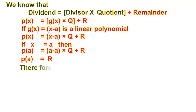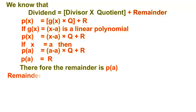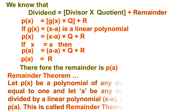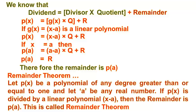Hence, P of A is equal to the Remainder. What is the Remainder Theorem? Let P of x be a polynomial of any degree greater than or equal to 1, and let A be any real number. If P of x is divided by the linear polynomial x minus A, then the remainder is P of A. This is called the Remainder Theorem.